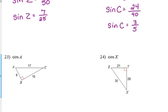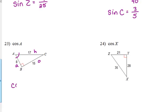Let's do cosine. 23, cosine of A. 17 is the hypotenuse, 8 is the adjacent, 15 is the opposite. So the cosine of the angle is the adjacent, 8, over the hypotenuse, 17. 8 and 17 do not share a common factor. So that is the cosine ratio for angle A.